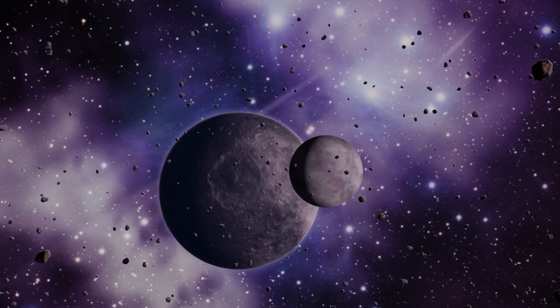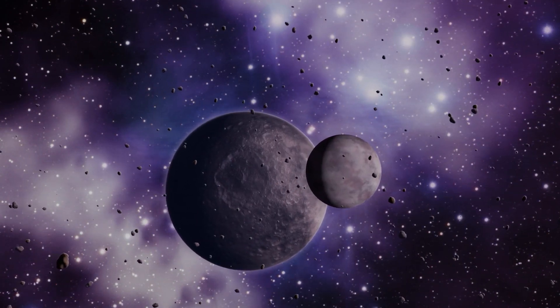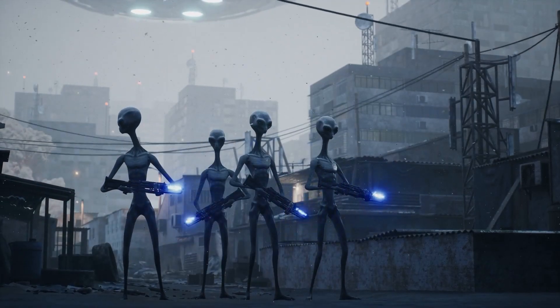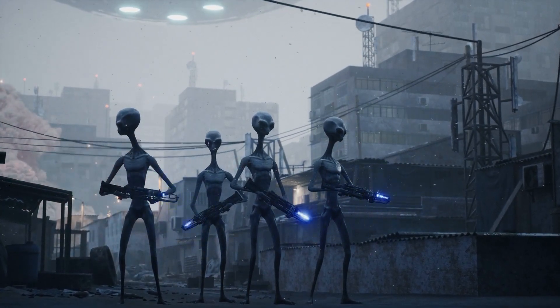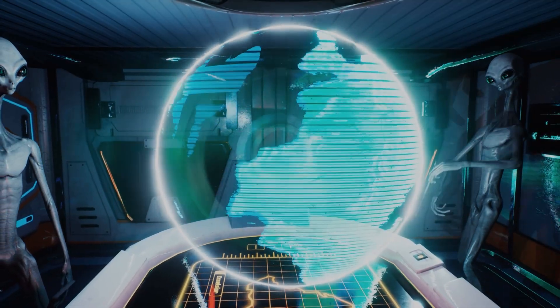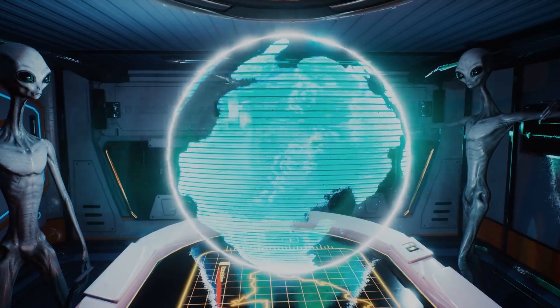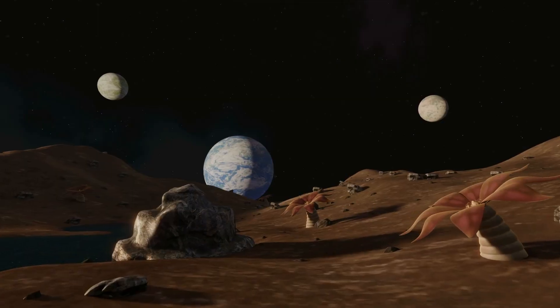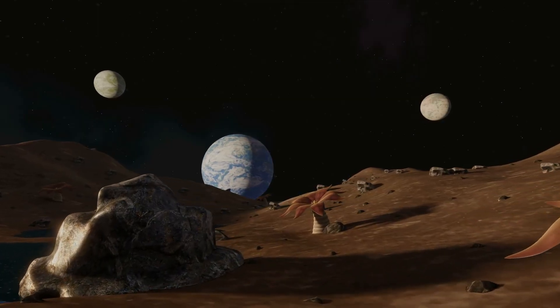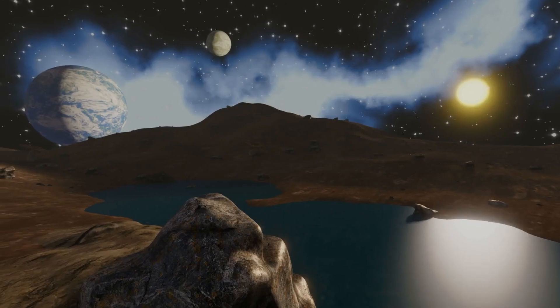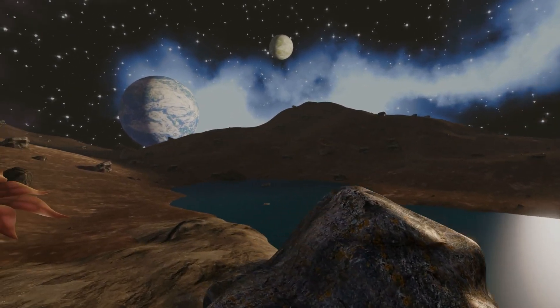If the universe is filled with potentially habitable planets, and intelligent life is likely to exist elsewhere, then why haven't we made contact with them yet? This is the Fermi Paradox, which asks why we haven't found evidence of intelligent life in a universe that's seemingly full of possibilities.